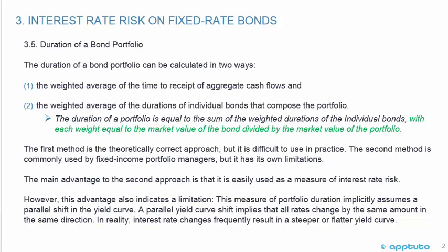The first method is the theoretically correct approach, but it is difficult to use in practice. The second method is commonly used by fixed income portfolio managers, but it has its own limitations. The main advantage to the second approach is that it is easily used as a measure of interest rate risk.